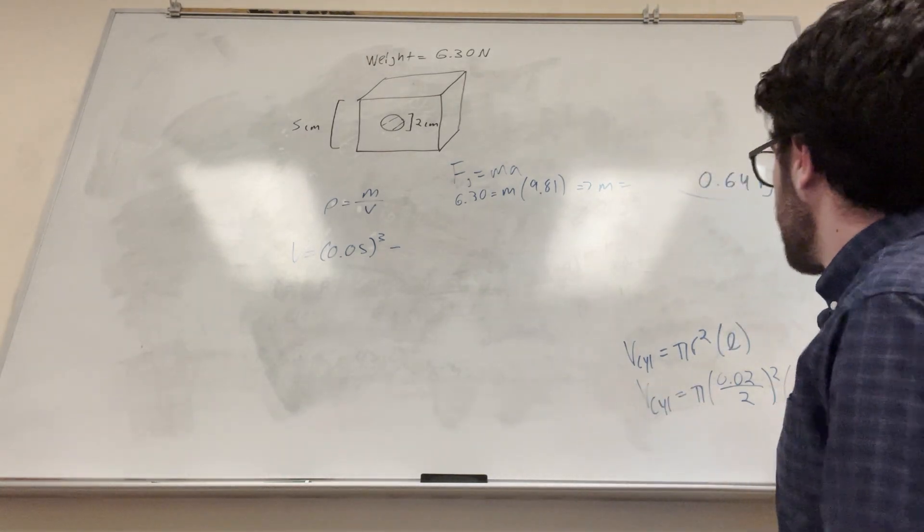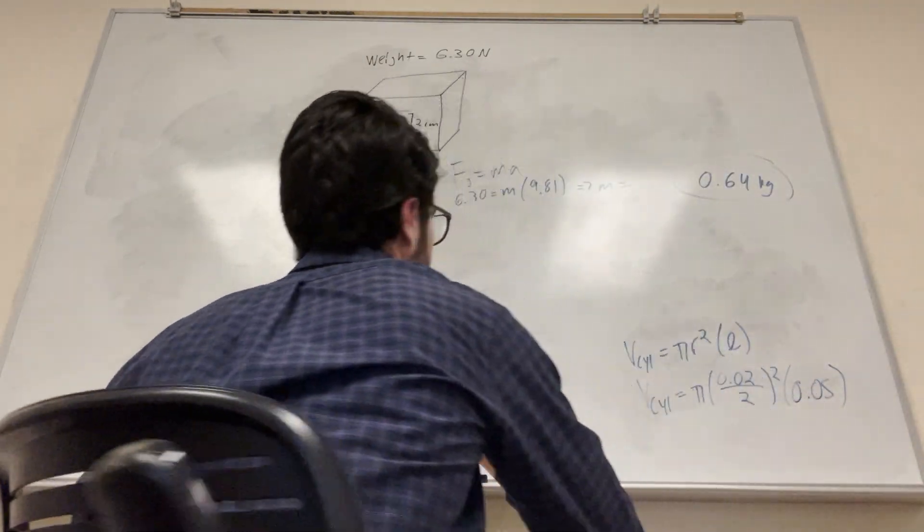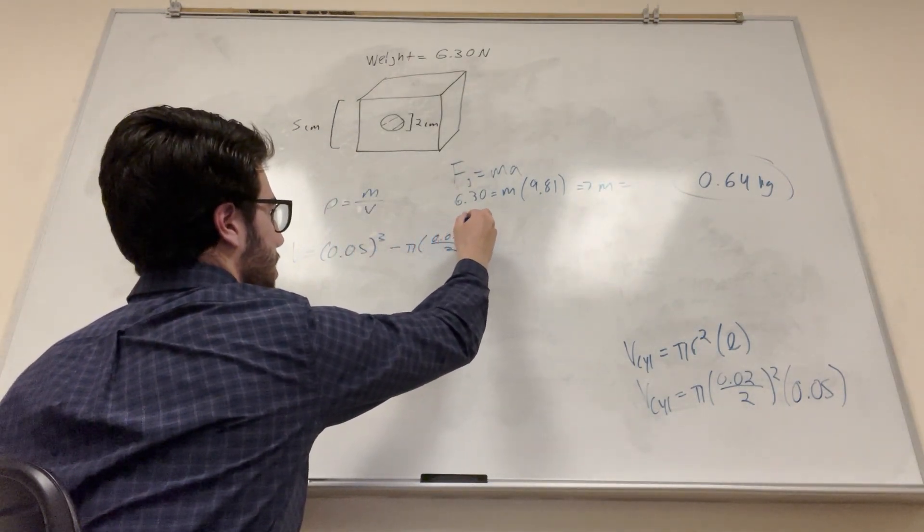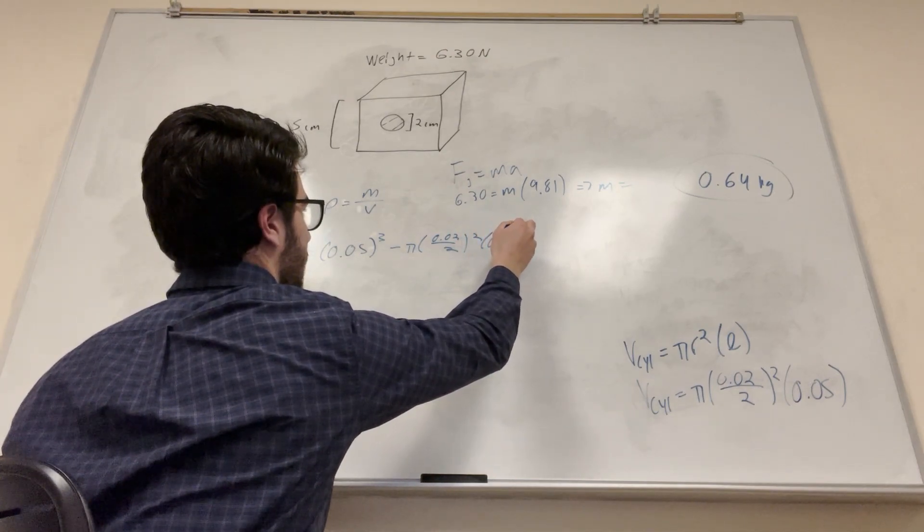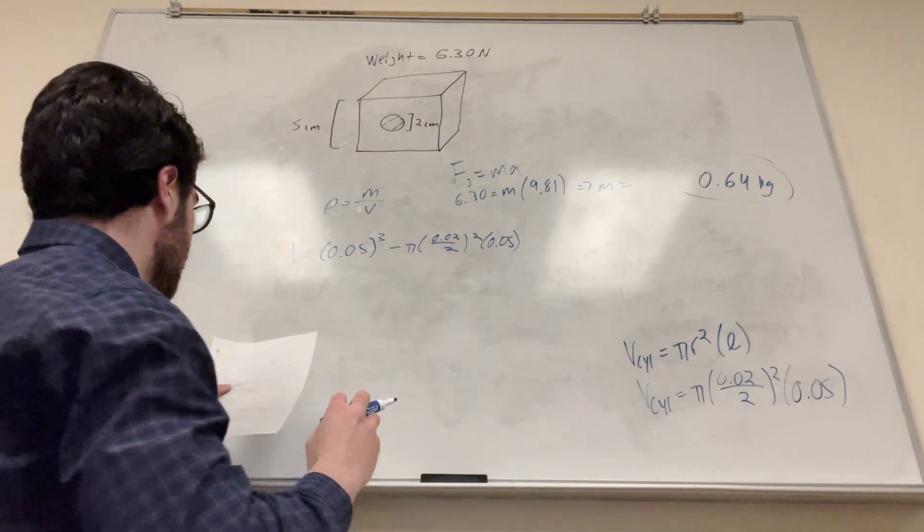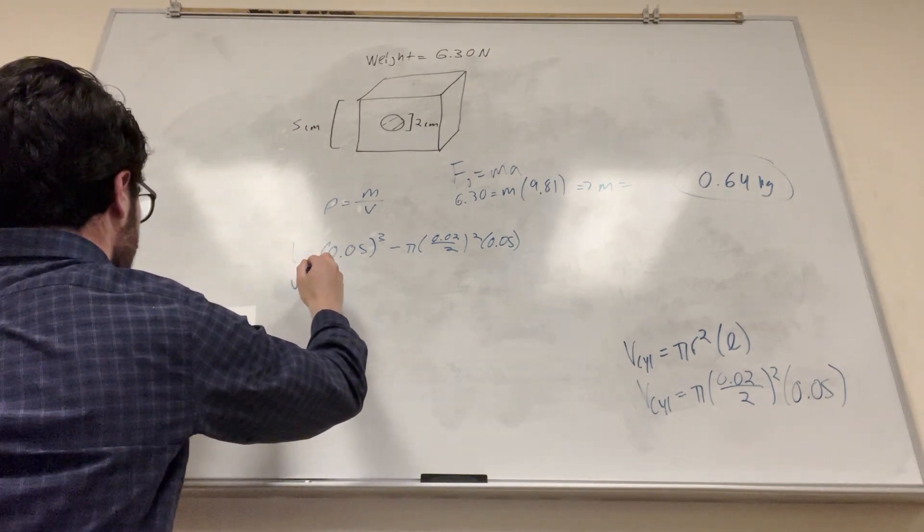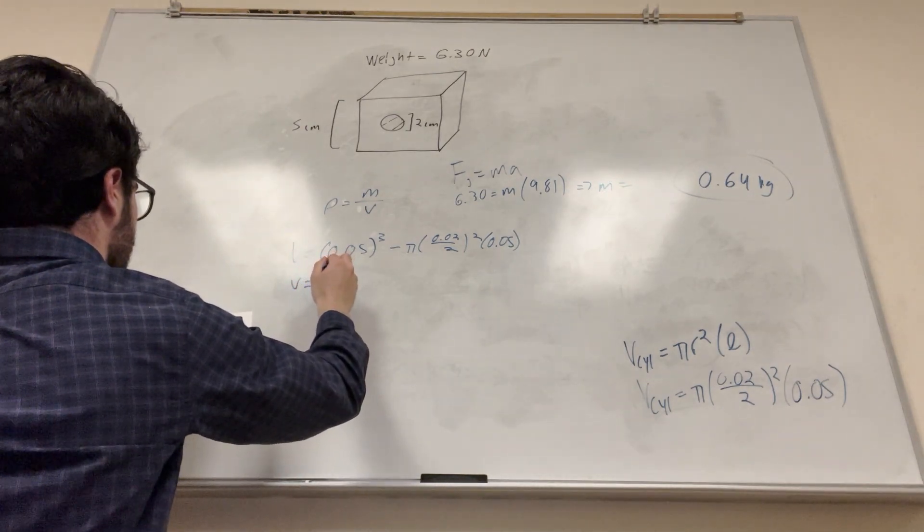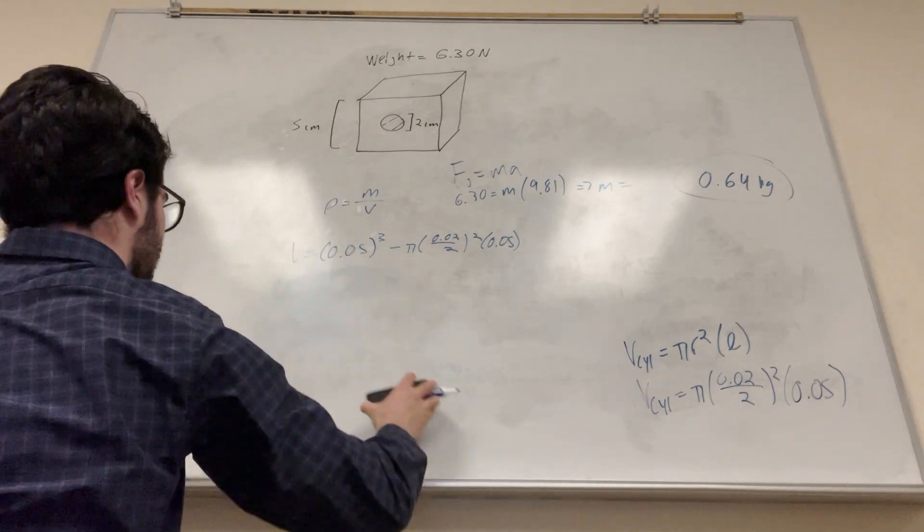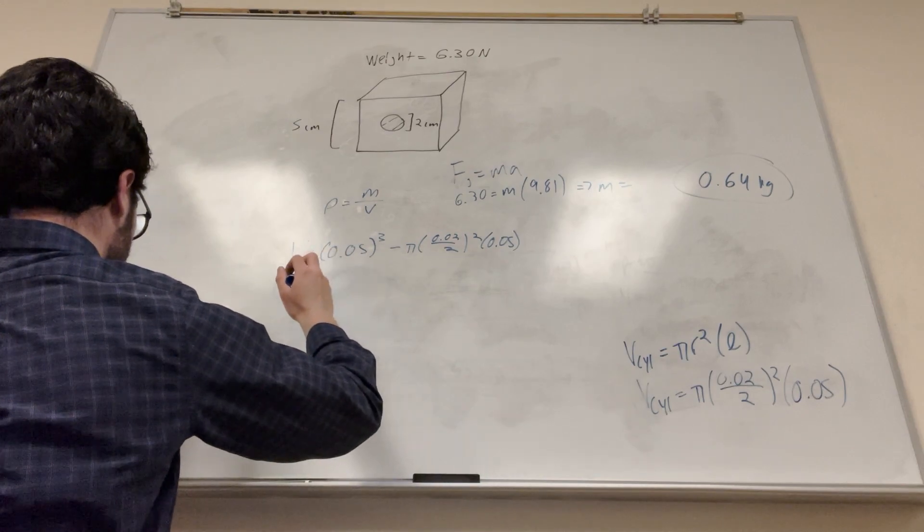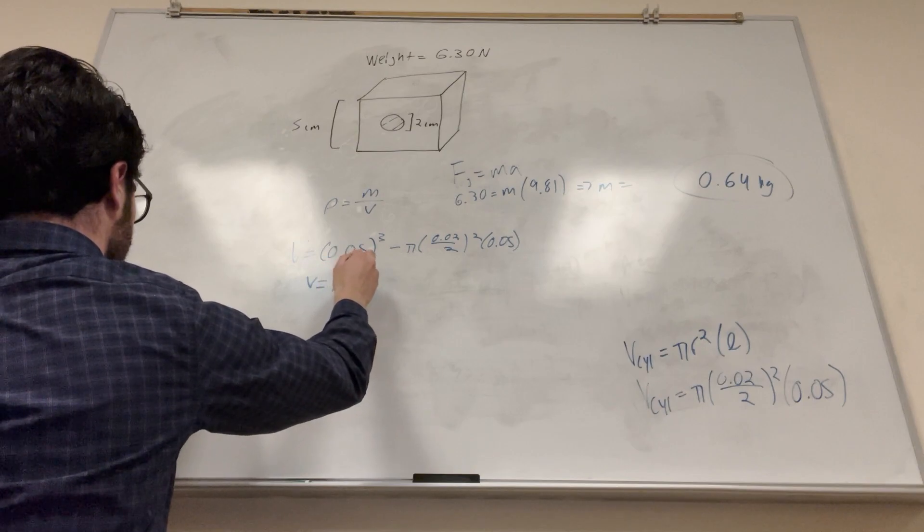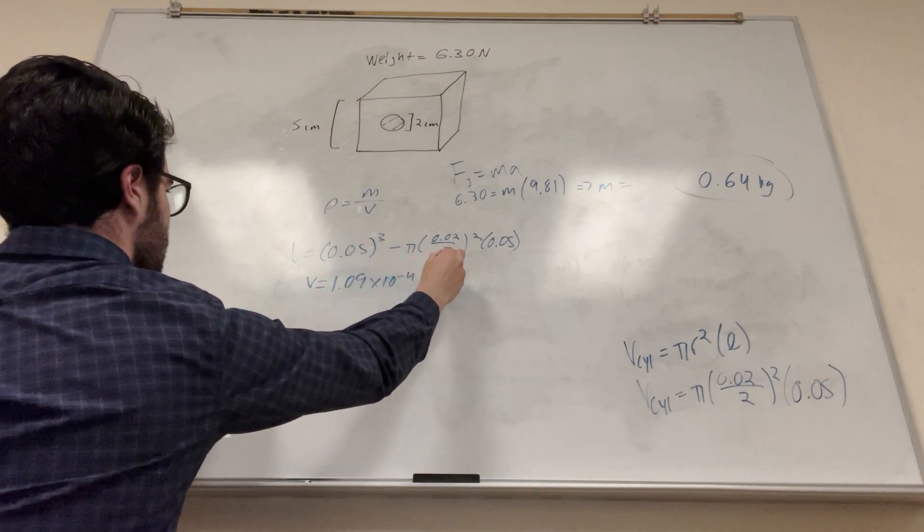So what we can do is just plug this into here, so it's going to be minus pi 0.02 divided by 2 squared, 0.05, and that's the volume. So if you calculate this, you're going to get that volume is equal to... I'm looking at the wrong problem again. Keep doing that. I need to make my problems more distinct. That's equal to 1.09 times 10 to negative 4 meters cubed.